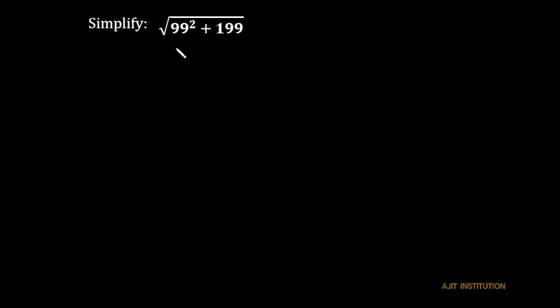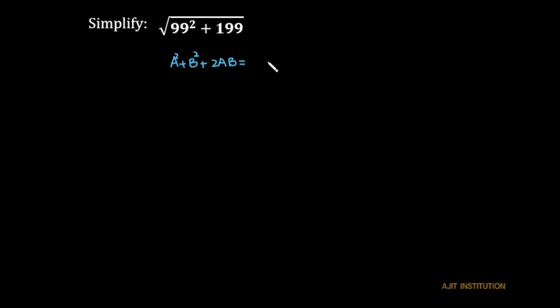The trick is we know the formula: a squared plus b squared plus 2ab is equal to (a plus b) squared. The value of a squared in our expression is 99 squared.